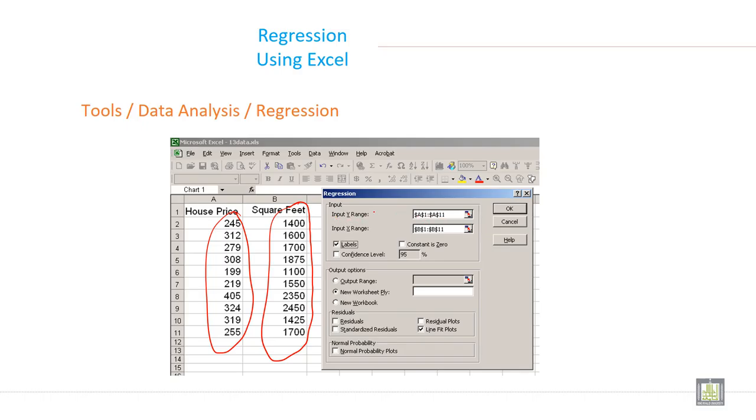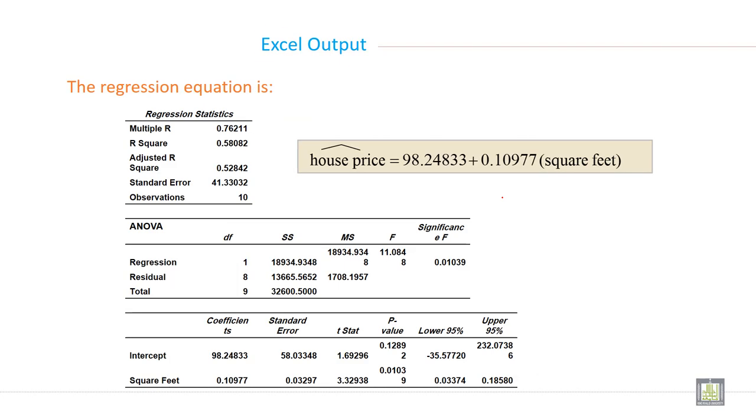So for input Y range, select this Y data, and for input X range, select this X data. Go to line fit plot and normal probability plot, and then click OK. When you click OK, you will get the answer. This is the Excel output for regression equation.